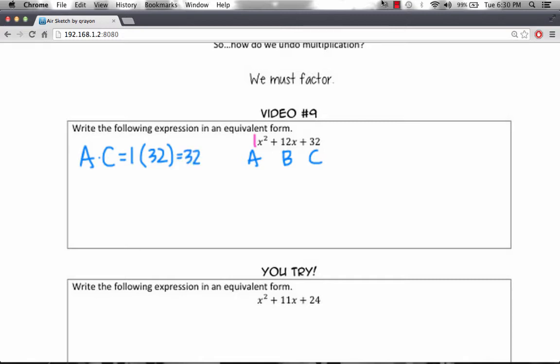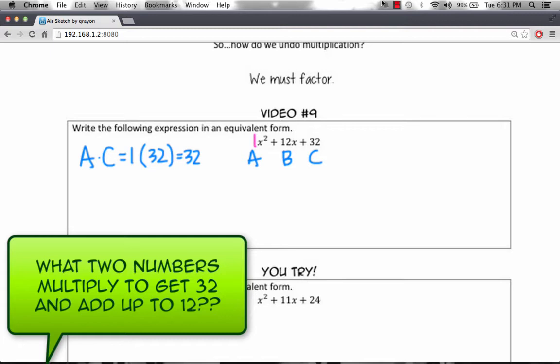Now we want to figure out what two numbers multiply to get to this value that add up to your b term. So in this case, 12.